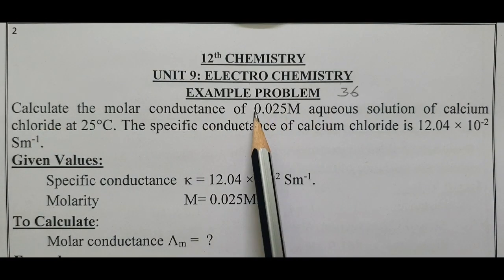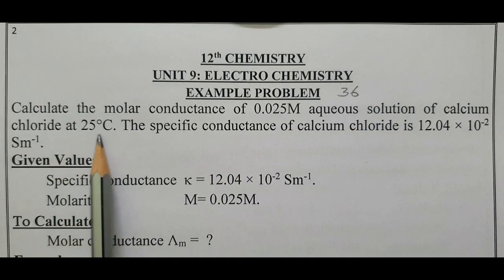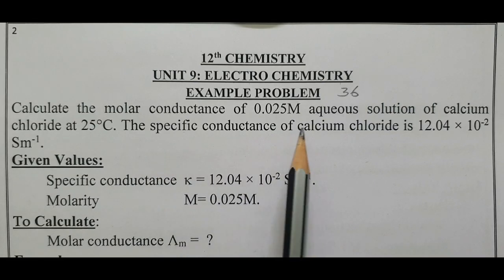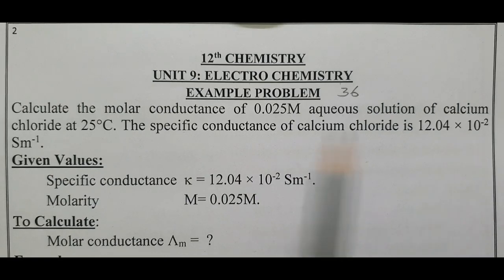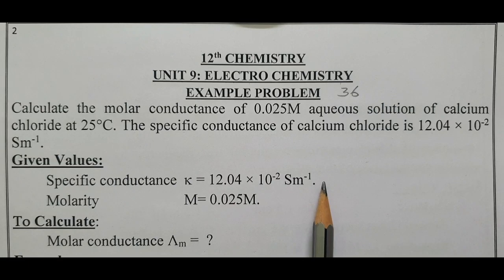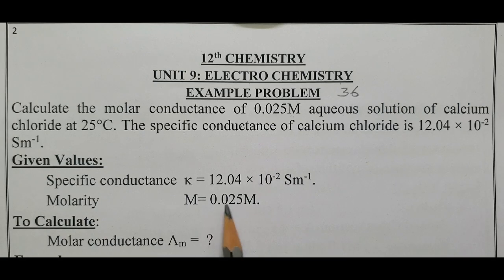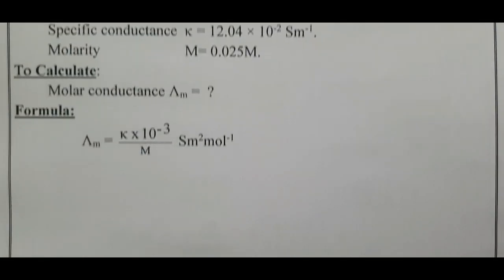Calculate the molar conductance of a 0.025 molarity aqueous solution of calcium chloride at 25 degrees Celsius. The specific conductance kappa of calcium chloride is 12.04 × 10⁻² S·m⁻¹. The given values are: specific conductance κ = 12.04 × 10⁻² S·m⁻¹, and molarity concentration = 0.025 M.